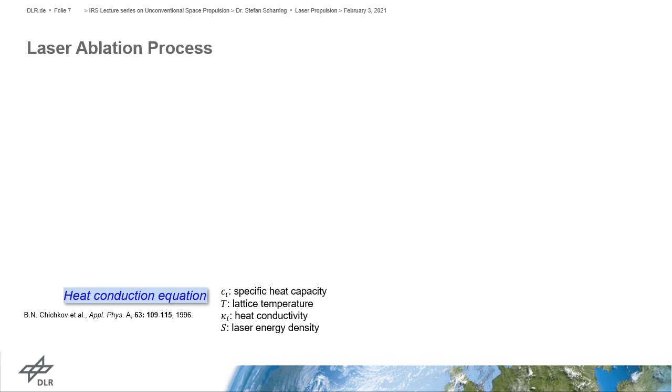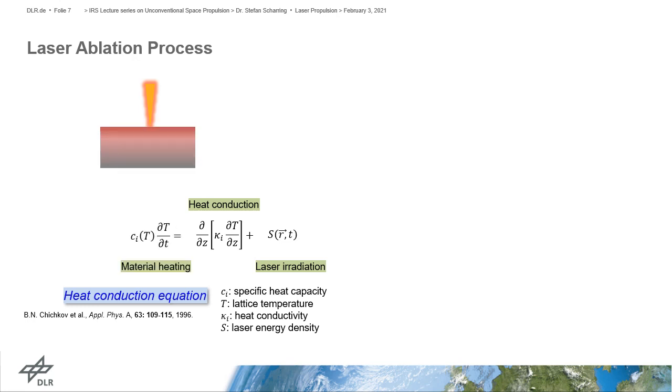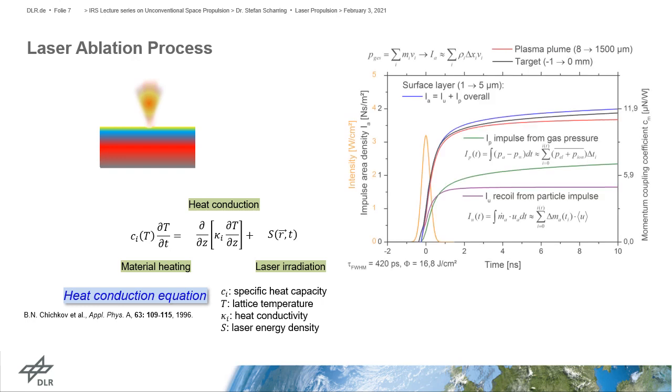So let us now have a deeper look at the laser ablation process. Material is irradiated by high power laser beam. Heat is conducted from the material surface into the deeper parts of the material. And finally, melting occurs near to the surface and vaporization at the surface itself. And a plume is generated that gives recoil to the remaining target material.